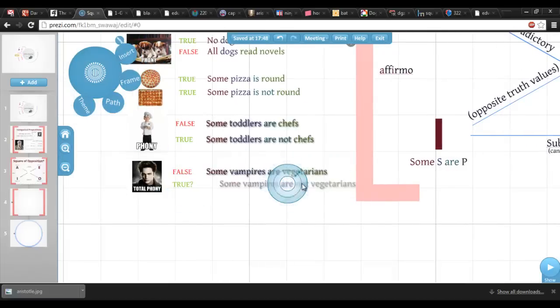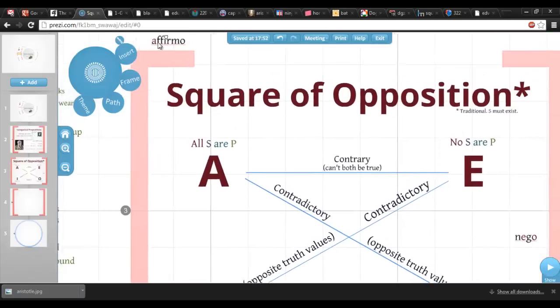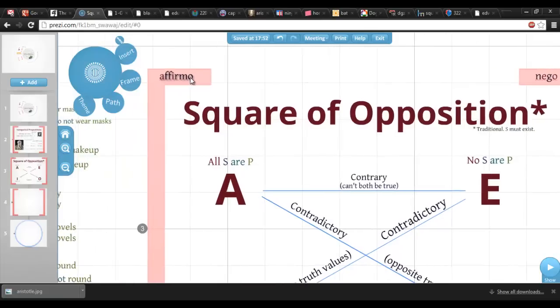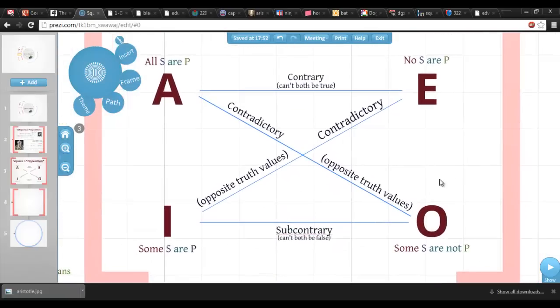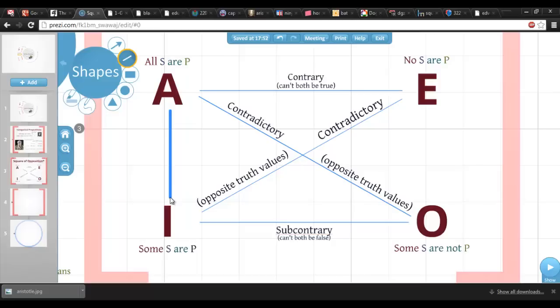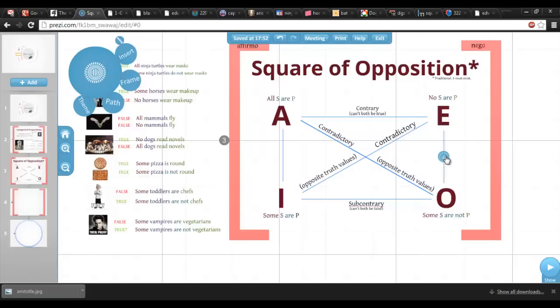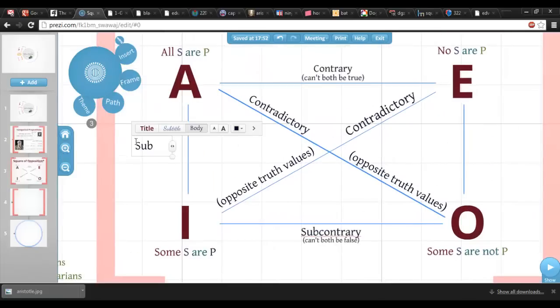This is what led logicians in the 19th and 20th centuries, like John Venn, to look for alternative ways of systematically expressing logical relations without this existential crisis. This eventually led to the development of modern logic, and we'll talk about modern logic later in the series. But modern logic doesn't make Aristotle's system wrong or useless. It just means we have to be careful about how we apply it, by making sure the subjects of our sentences actually exist.